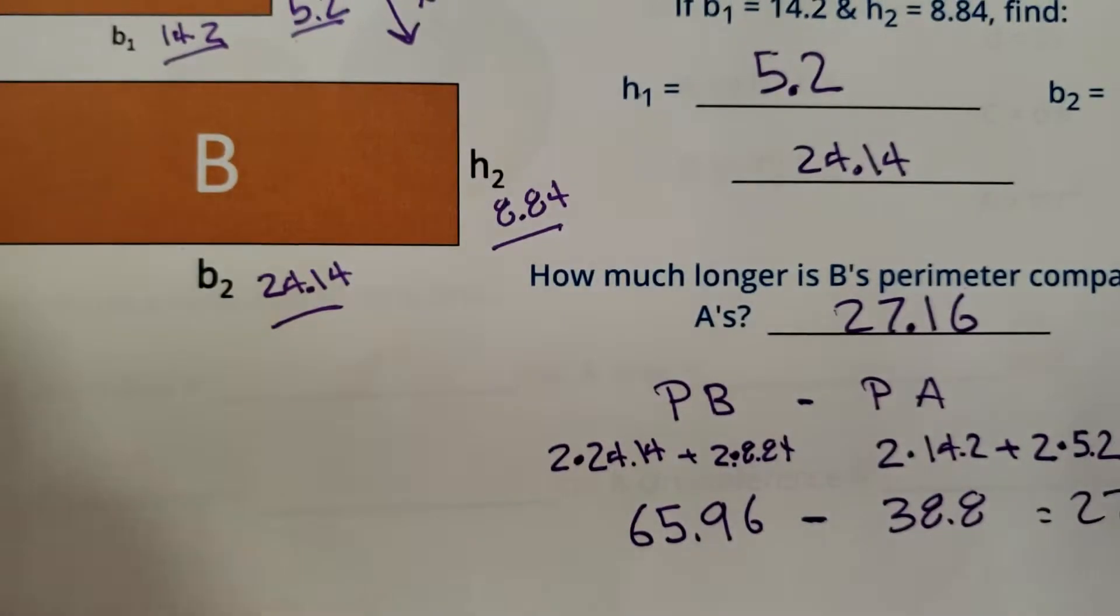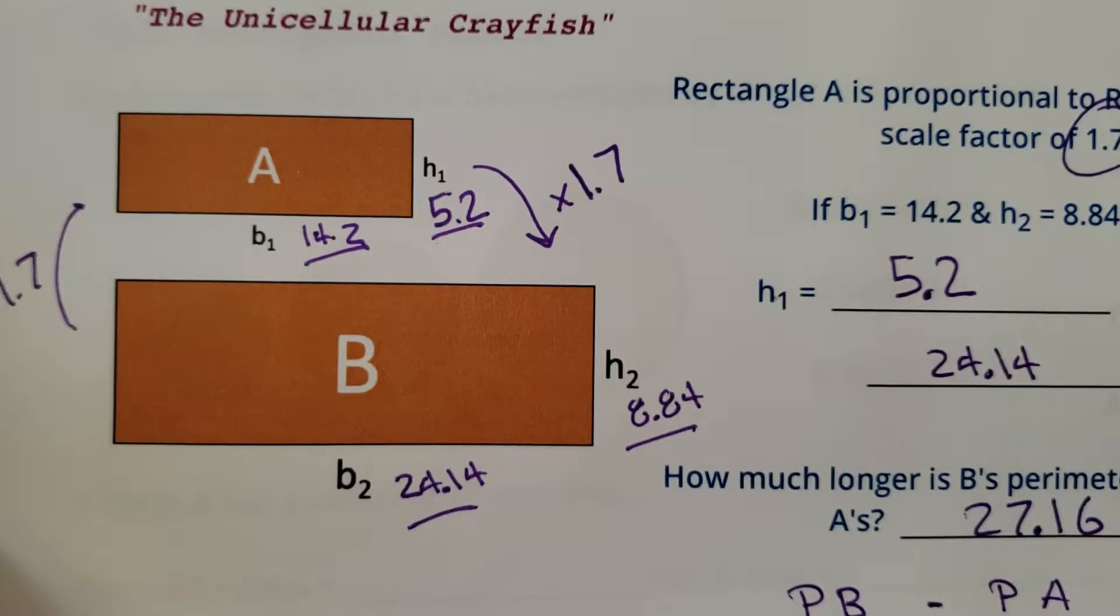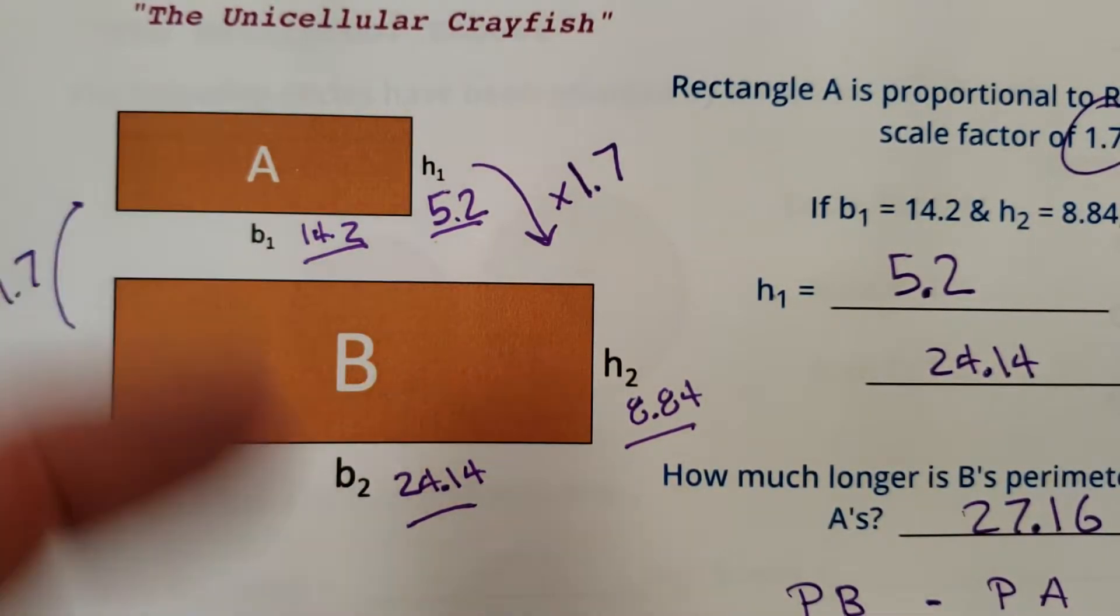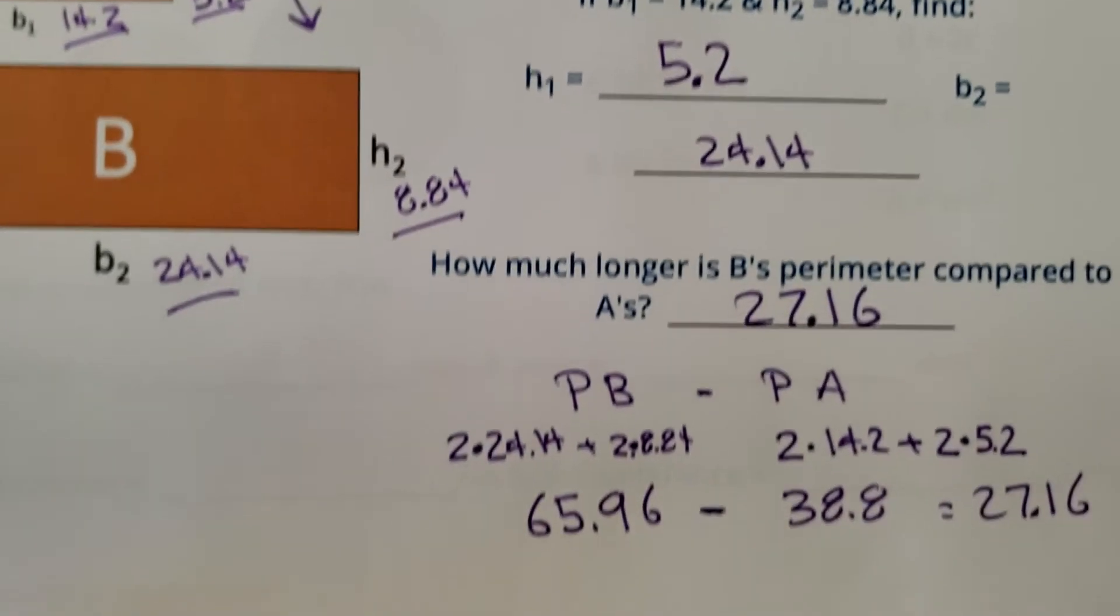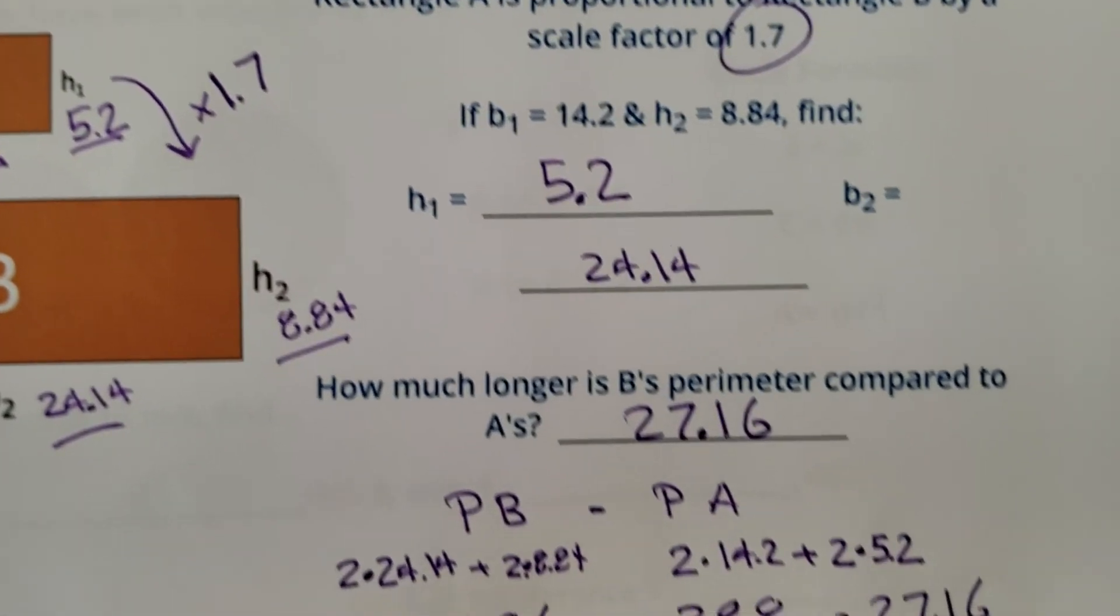Okay. Kind of a neat little trick, though. Okay. Kind of a neat little trick. We'll talk more about some other neat tricks on when you compare the areas, but not for today. It's kind of like 1.7, but anyway. That is the unicellular crayfish.